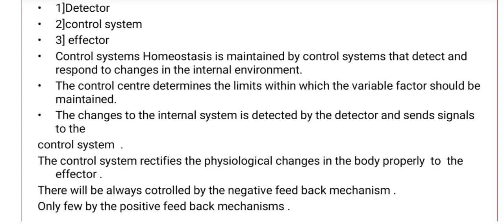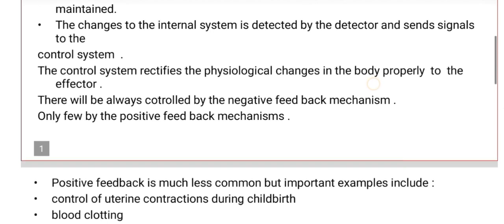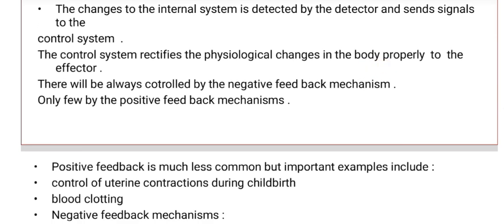The control center determines the limits within which the variable factor should be maintained, keeping the process in equilibrium. Changes to the internal system are detected by the detector, which sends signals to the control system. The control system then rectifies the physiological changes and communicates to the effector for correction.